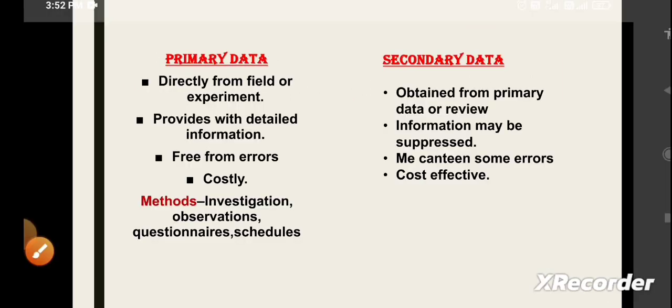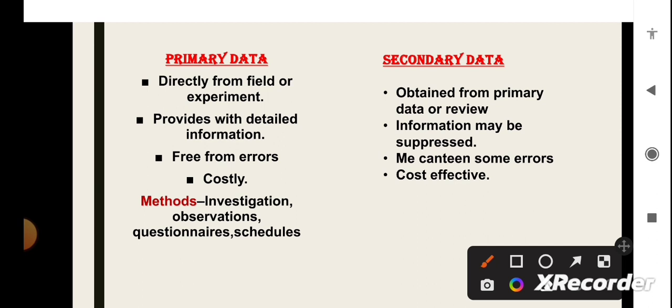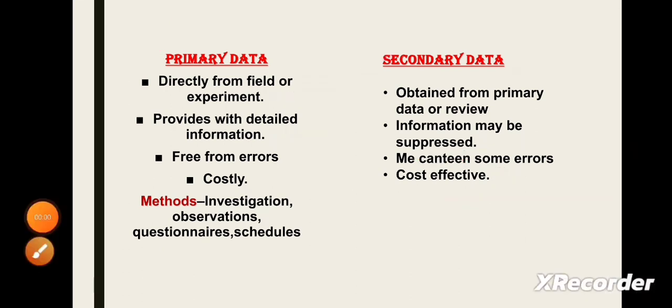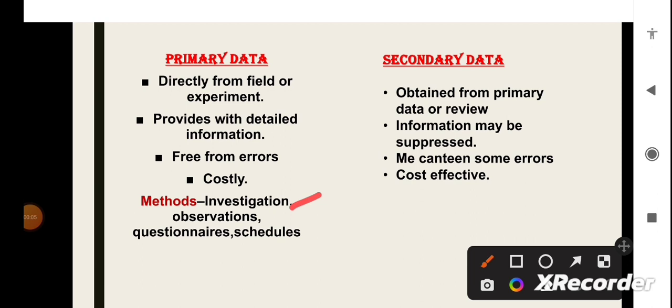Next, on the basis of source of collection of data, these can be classified as primary data or secondary data. The primary data are those which are directly collected from field or experiment. So, these provide us with detailed information and they are free from errors. On the other hand, the secondary data are obtained from primary data or review due to which some information may be suppressed and they may contain some errors. One important point or benefit of secondary data is that it is cost effective. The methods of collection of primary data are investigation, observations, questionnaires, schedules and interviews.